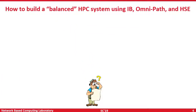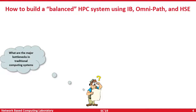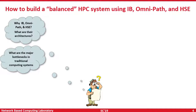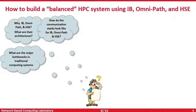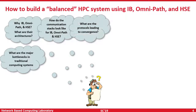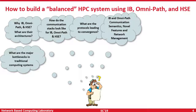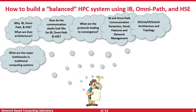The major question is how to build a balanced system using these kinds of interconnects. For example, the questions are: what are the major bottlenecks in traditional computing systems? Why did InfiniBand, Omnipath, and High-Speed Ethernet come into the picture? What are their architectures? How do the communication stacks look like for these interconnects? What are the protocols leading to convergence? And especially for each one of these interconnects, what are their communication semantics and novel features?